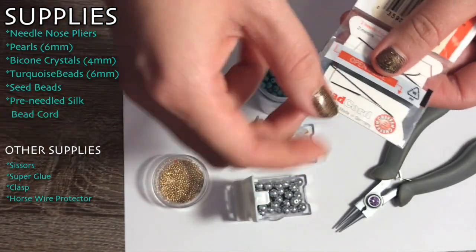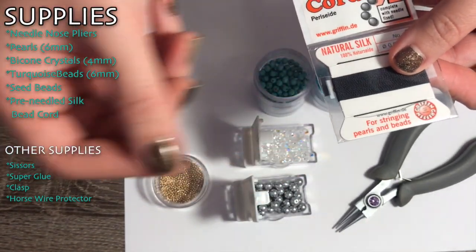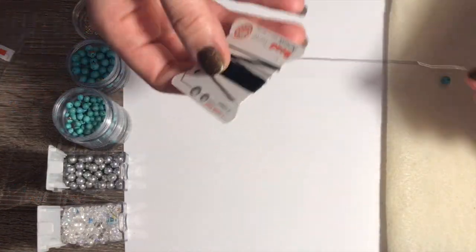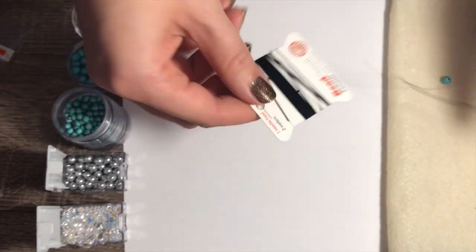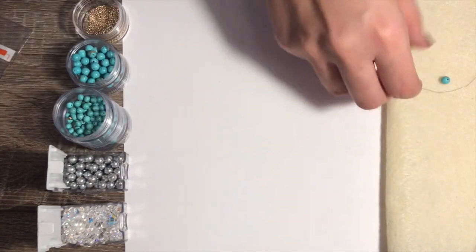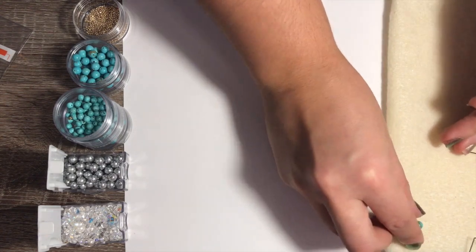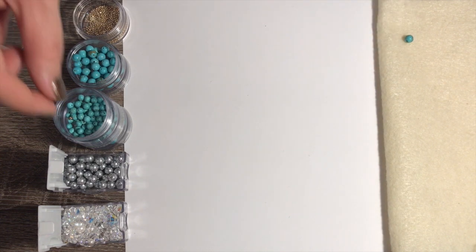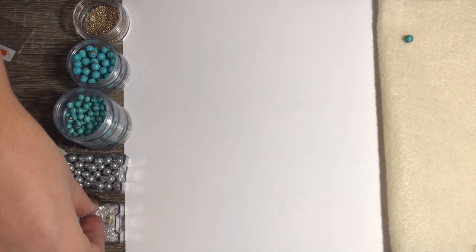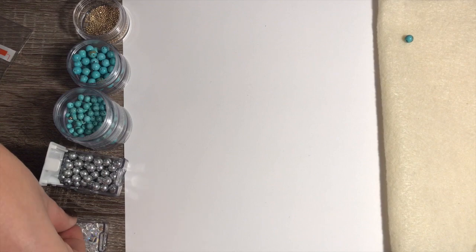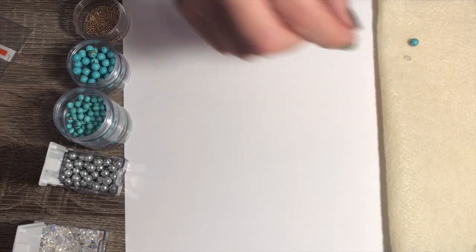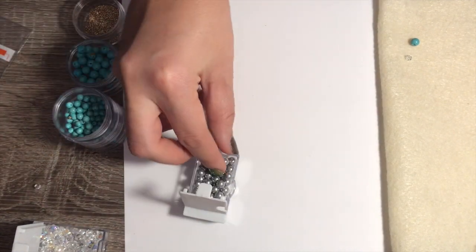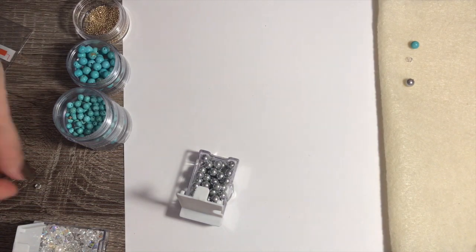The first thing I do is I take the cord off of the card and I lay out my pattern. I just use a piece of felt like this here and I lay out my beads. Today I'm just going to do a random pattern, but it really helps to lay it out first so you can do a balance of the colors and of the textures of the beads, just so that it looks balanced.